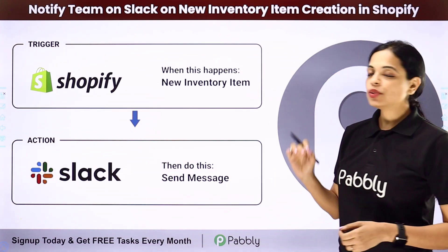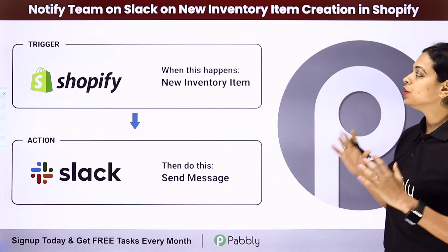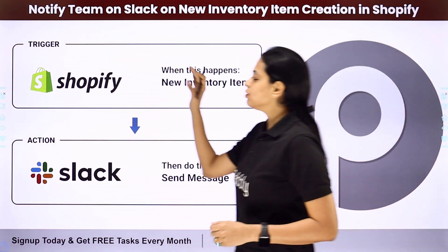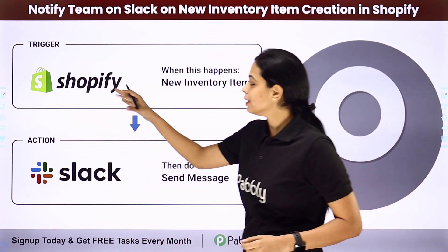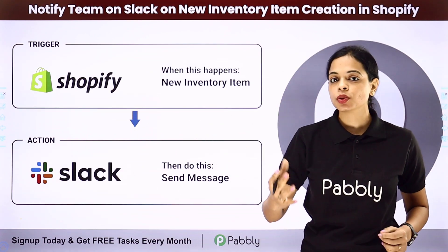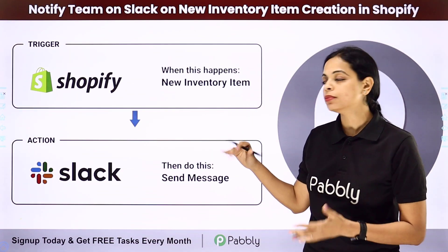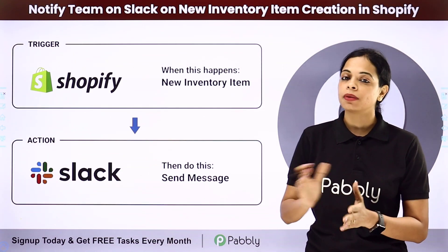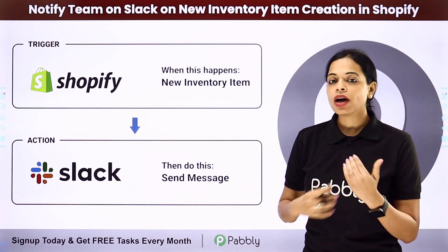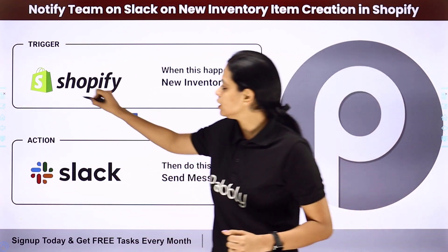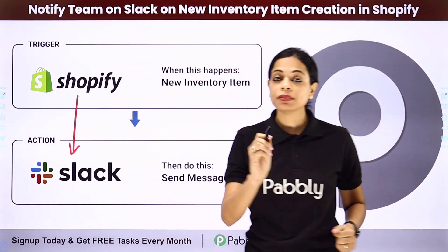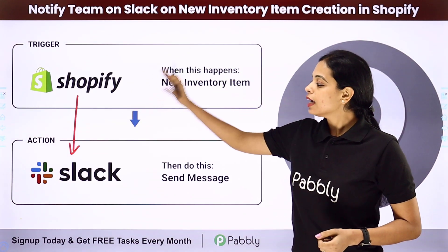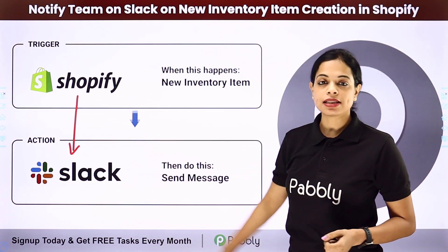In this video, we are going to see how to notify a team on Slack on new inventory item creation in Shopify. If you have Shopify as an e-commerce platform, every time a new product is created as a new inventory item, your team on Slack should be automatically updated through a message. This can be done by integrating the two applications using Pabbly Connect, where your trigger application would be Shopify and your action application would be Slack.